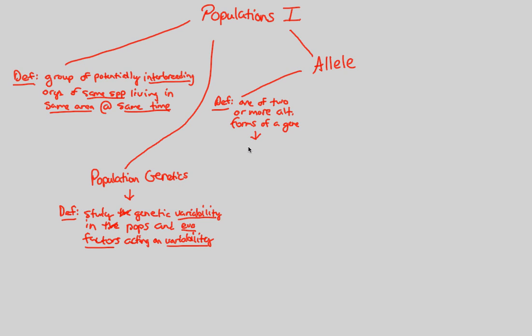And these alternate forms, they occupy what we call corresponding loci on homologous chromosomes. This is something we've already learned and established. Now we're going to apply it to a more novel look, specifically focusing on populations and the role of alleles in populations.